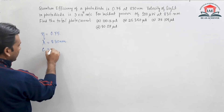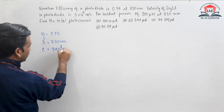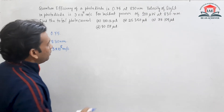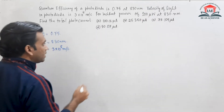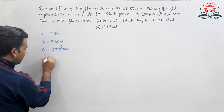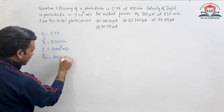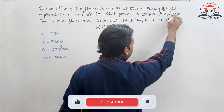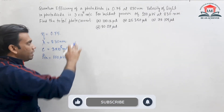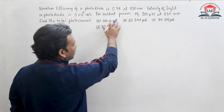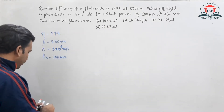The velocity of light is c = 3×10⁸ meters per second. For an incident power of 100 microwatt at 830 nanometer, we need to find the total photocurrent that will flow inside the photodiode, with four options given.